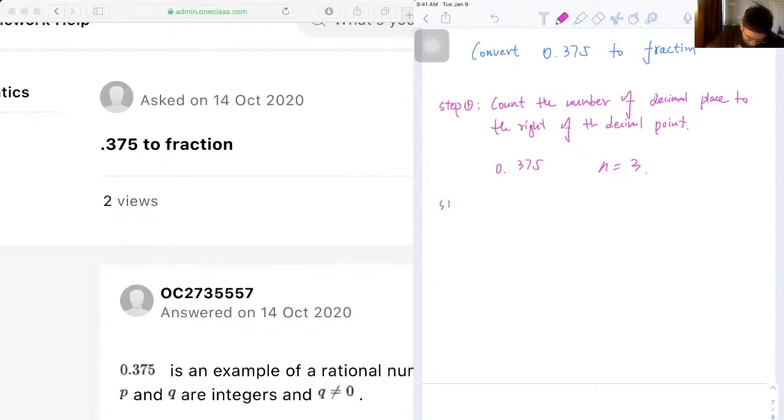So step two will be the multiplier. We need to multiply the decimal number by 10 to the exponent of n, where n in our case will be 3.